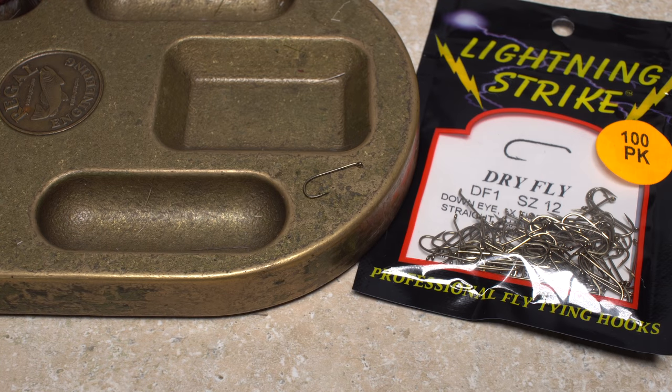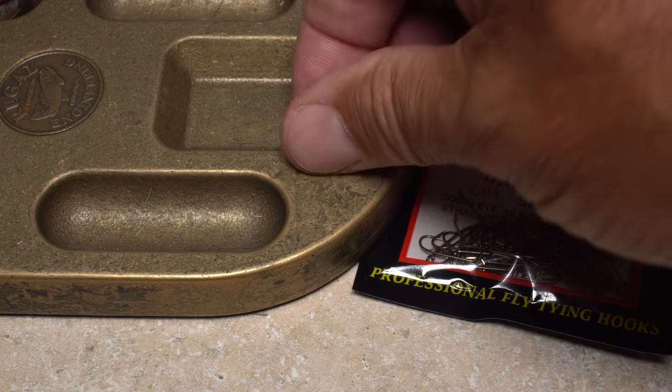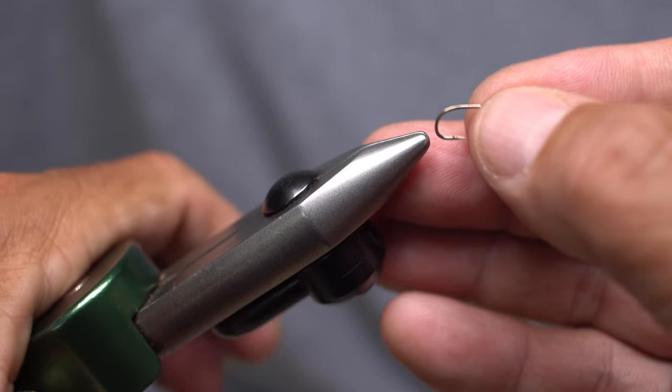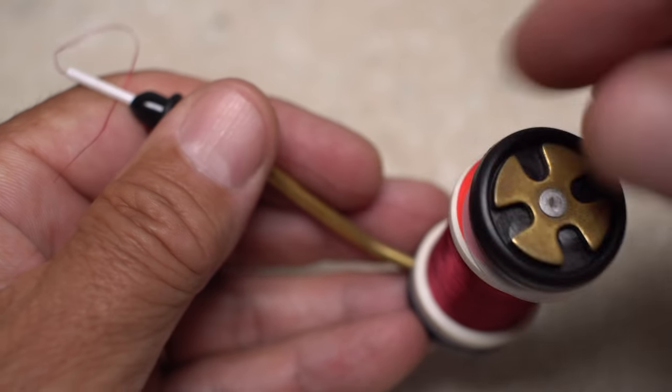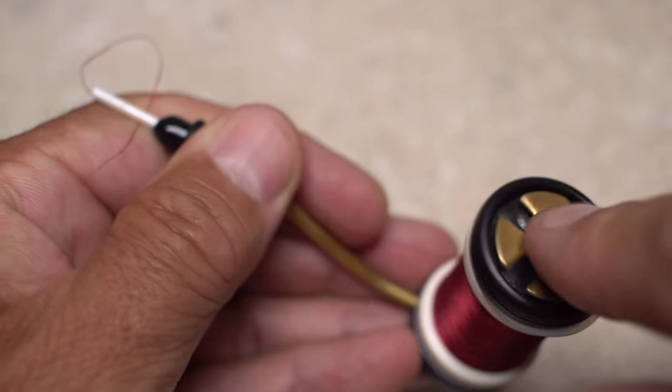For a hook, I'm going to use a Lightning Strike DF1 in size 12. Begin by getting the hook firmly secured in the jaws of your tying vise. For thread, I like wine-colored UTC 70 denier.